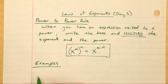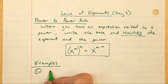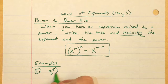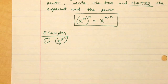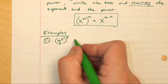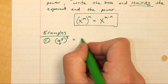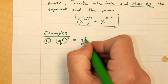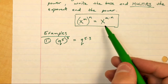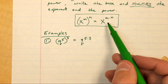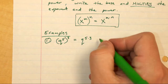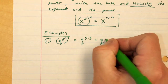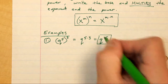The first example I have is q to the fifth power, all of that raised to the third power. This is the same thing as q to the fifth power times three. I'm just following the power-to-power rule — multiplying one power by another — and this gets me q to the fifteenth power. And that is your answer.